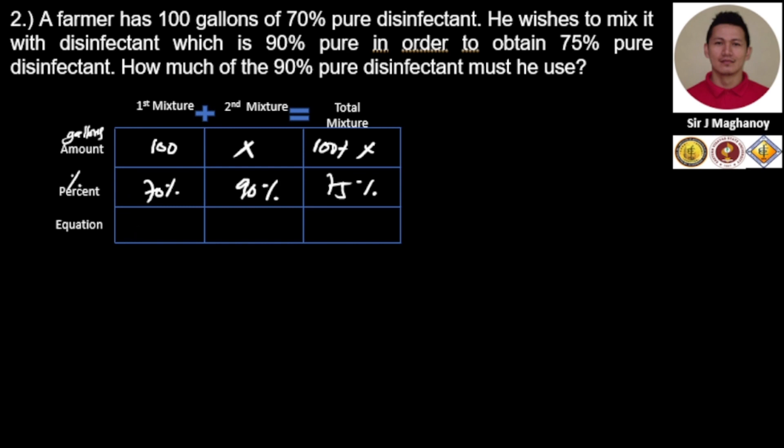times 0.70, that is 70, plus 0.90X, equal to 75 plus 0.75X. So we have our equation.